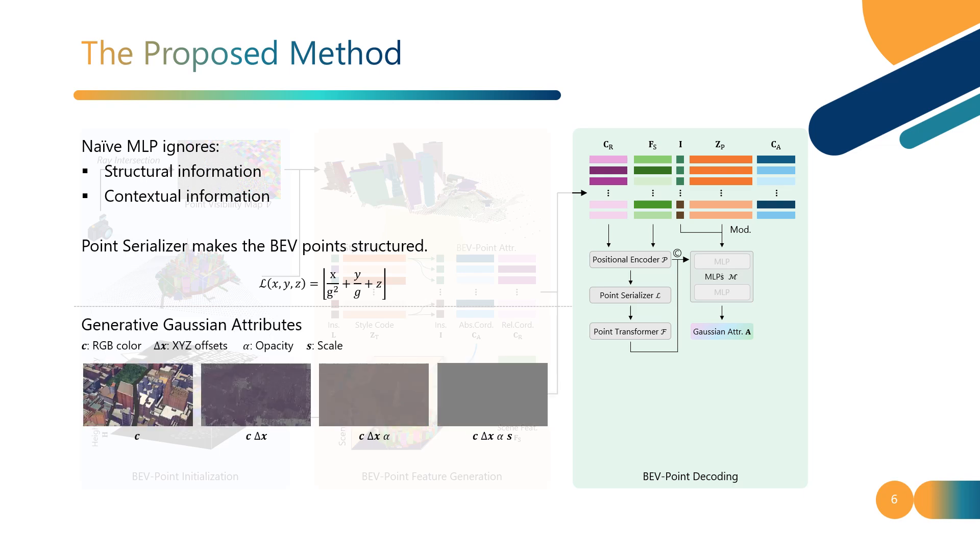Therefore, Gaussian attributes other than RGB can be left unestimated and defaulted. Generating attributes beyond RGB not only complicates network convergence but also significantly impacts the quality of the generated results.